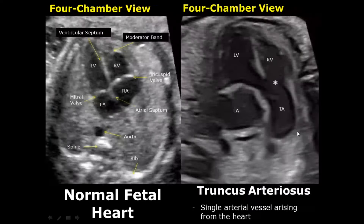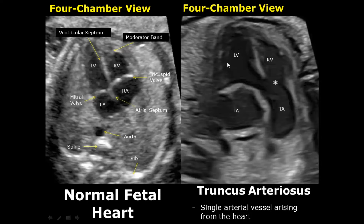In the case of truncus arteriosus, a single vessel will arise from the heart. Here we only see one vessel — we do not see a second vessel — just one vessel arising from the heart.